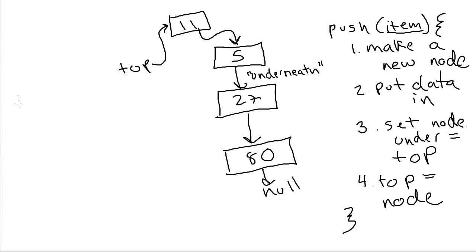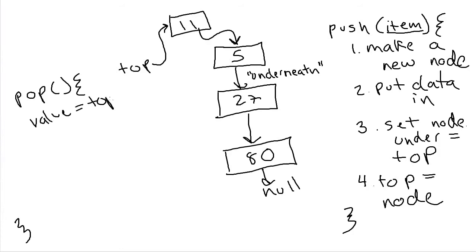Now let's talk about pop. Pop will be a little bit different because we didn't specifically look at an algorithm to remove the front of a linked list — we instead had a more general remove method that could remove any of the nodes. We want to do basically two things: we want to remove the node 11 so that top instead refers directly to the five, and we also want to return the value that was stored in this node. The order of this is important, just like the pop method with the array. The first thing we need to do is to store the return value — that's top's data — into a temporary variable, because after we bypass top past the 11 node, we're not going to be able to access it anymore.